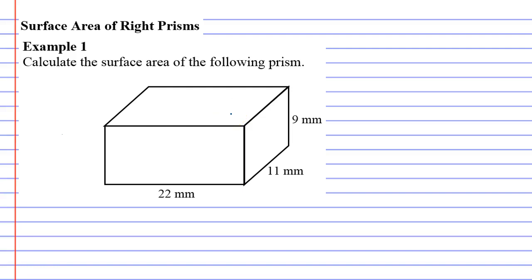And this is really useful for someone such as a painter, because a painter might come along and they need to paint the outside of some rectangular prism shaped object. And by calculating the surface area, they can actually figure out exactly how much paint they need to cover the object.